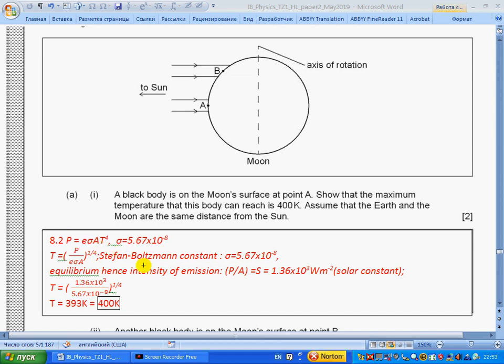Sigma is the Stefan-Boltzmann constant. Temperature can be written in this way because we have equilibrium. Intensity of emission, which is P/A, equals solar constant. We substitute instead of P/A the solar constant. Substitute e—it is one for a black body—and Stefan-Boltzmann constant goes here, so we get 400 kelvin.